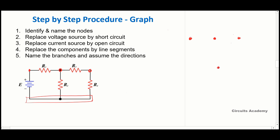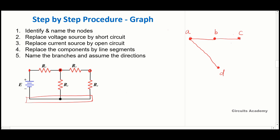We have four nodes — assume them as A, B, C, and D. Step two: replace the voltage source by a short circuit. We have a voltage source connected between node A and node D, so replace it with a short circuit. Then replace any current source by an open circuit; since we don't have a current source here we skip that step. Step four: replace the components by line segments — replace R1, R2, R3, and R4 each by a line segment.